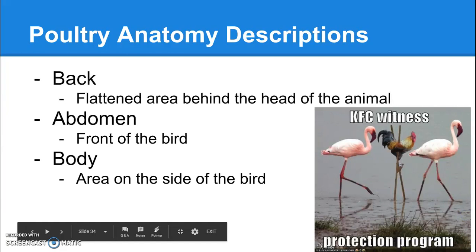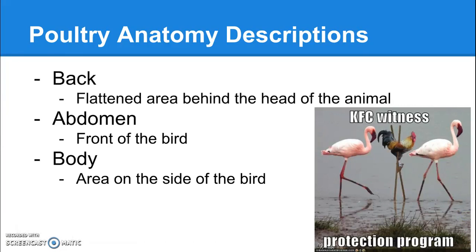The back is that flattened area just behind the head of the animal. The abdomen is at the front of the bird, very similar to where your abdomen would be. The body is basically the side of the bird — we call it the body instead of the side because it's poultry.